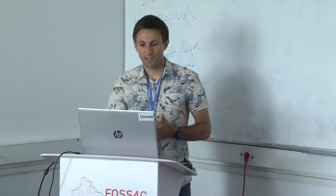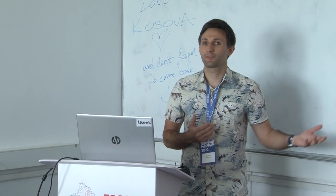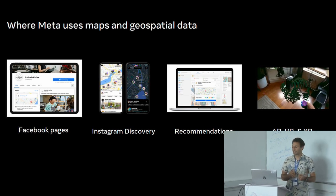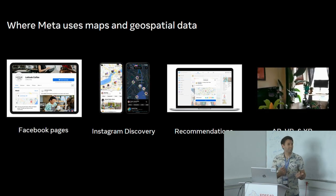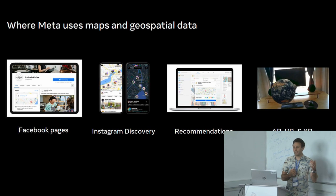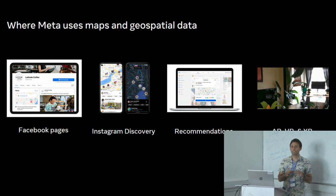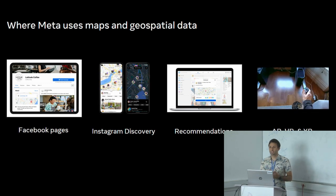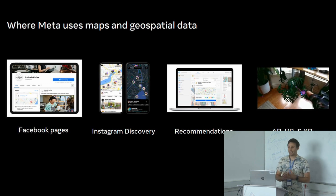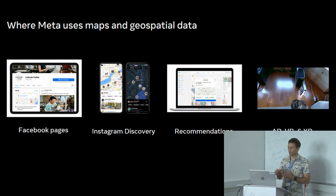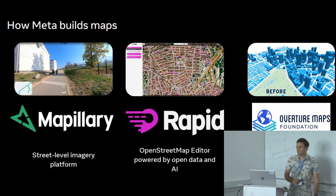Hello to the people tuning in online as well. Just a bit of overall context: Meta uses maps and geospatial data. A common question is does Meta have maps? We use it in things like Facebook pages, location on Instagram discovery, map results when searching for geospatial terms, recommendations on Facebook, and what I'm really excited about is the AR, virtual reality, and XR side — that's the future of maps we're building towards.